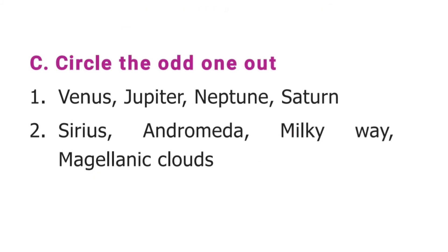The next section is circle the odd one out. The first question is: Venus, Jupiter, Neptune, Saturn. The answer is Venus. The second question is: Sirius, Andromeda, Milky Way, Magellanic Clouds. The answer is Sirius.